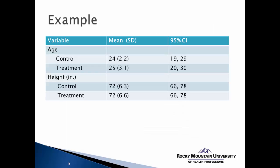Here's an example of what a table may look like in describing some demographics by group. In this case, we have age and height as two demographics that are interesting to us. So we're going to report these by group with a mean, a standard deviation, and also a confidence interval for each of these demographics.